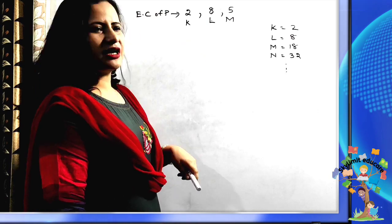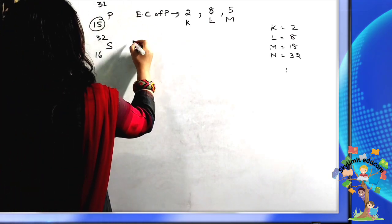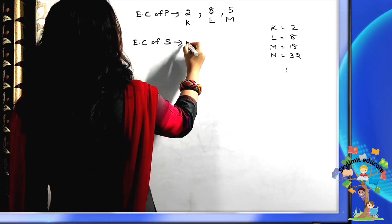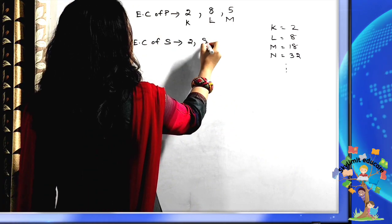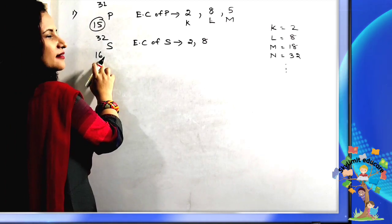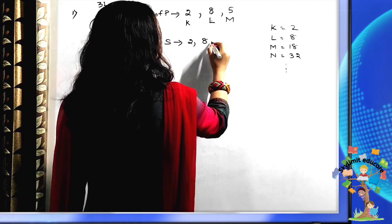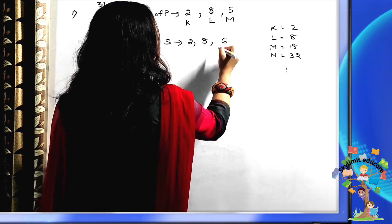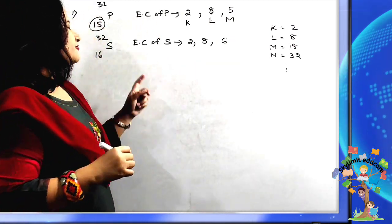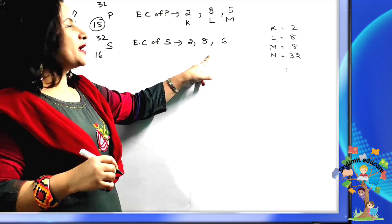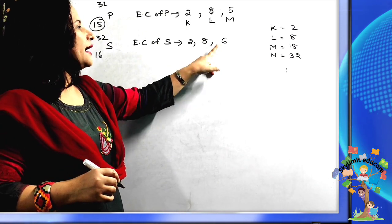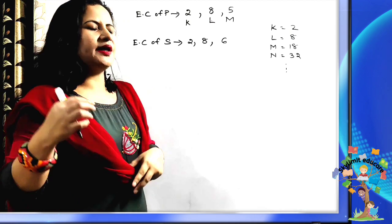Now write the electronic configuration of sulfur with atomic number 16. First shell: 2, second shell: 8 — that's 10 used, leaving 6 remaining. The third shell gets the remaining 6 electrons. So sulfur has the electronic configuration 2, 8, 6: K shell has 2, L shell has 8, and M shell has 6 electrons.